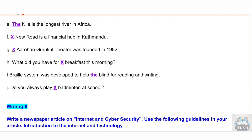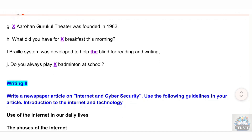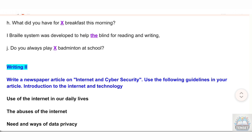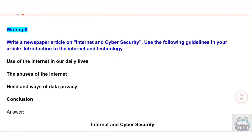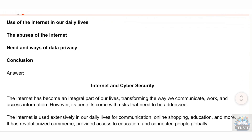J — Do you always play × badminton at school? Writing Task: Write a newspaper article on internet and cyber security using the following guidelines: introduction to the internet and technology, use of the internet in our daily lives, the abuses of the internet, the need and ways of data privacy, and a conclusion.